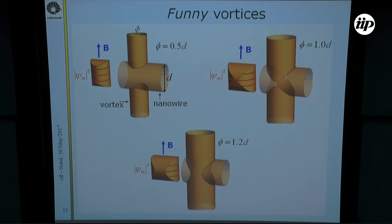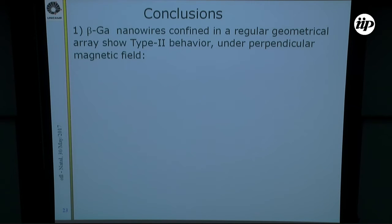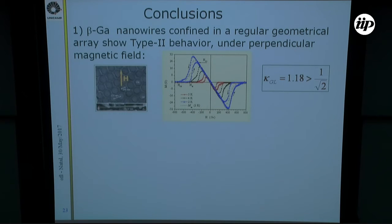As I said, this is an expectation, and it would be nice if some simulation using 3D Ginzburg-Landau equations could in fact verify those kinds of vortices. As a conclusion, the first is that we were able to see type-2 superconductivity in beta-gallium nanowires confined in this regular special geometrical array. I emphasize this point that this geometrical constraint is essential to stabilize the beta-gallium phase.